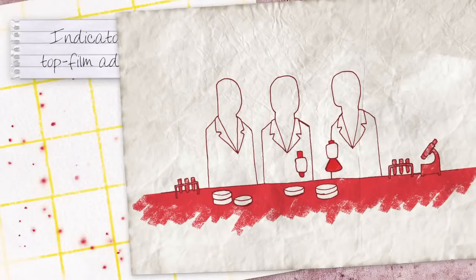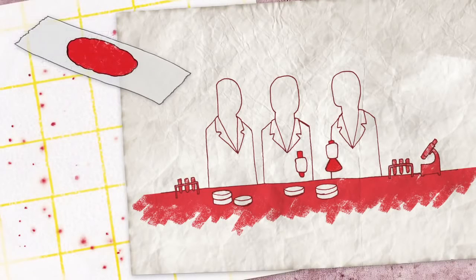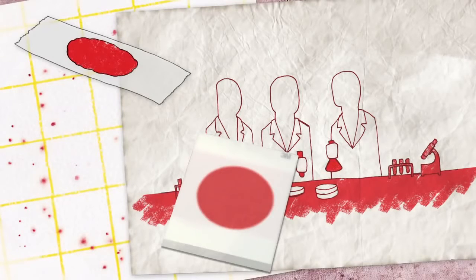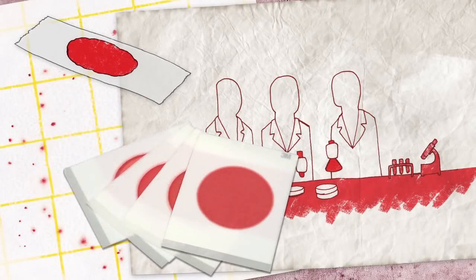After four years of development, 3M scientists had taken the concept that started as guar gum coated on scotch tape and turned it into a robust design that gave consistent performance and could be precisely manufactured.